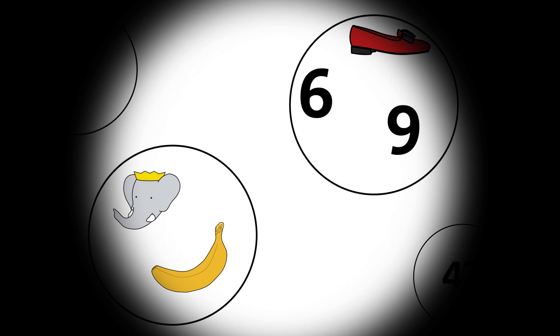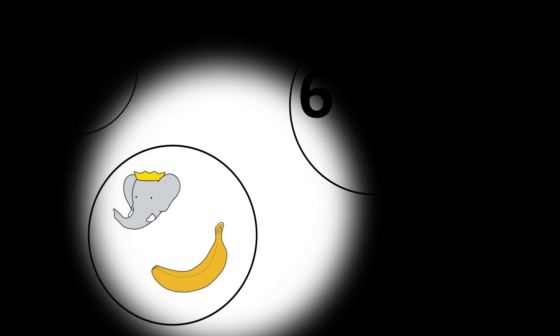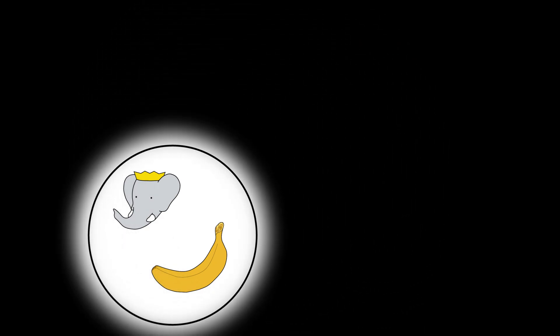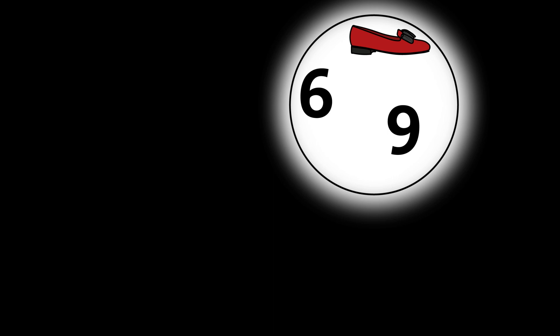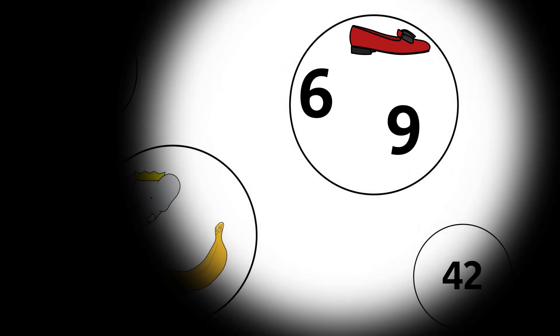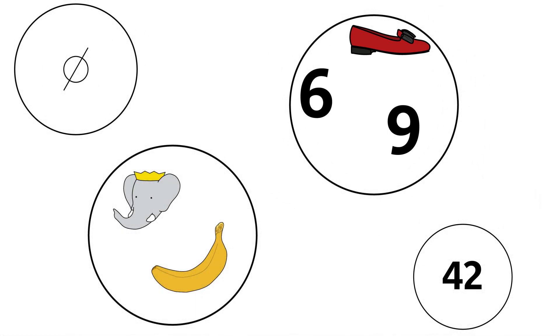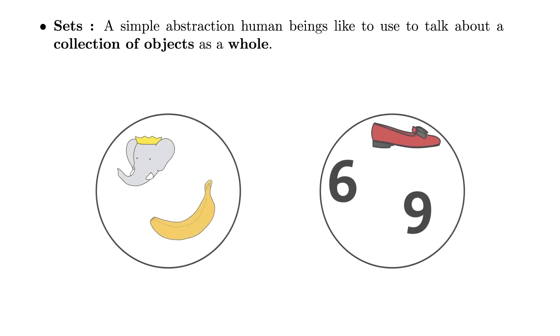Your journey starts in the territory of sets. Looking around, all you can see are sets. Some contain bananas and elephants, others have numbers and red shoes. They can contain everything you can imagine and even more. That is because sets are a simple abstraction human beings like to use to talk about a collection of objects as a whole. For the vast majority of them, their elements don't interact with each other so that nothing is happening inside of them.